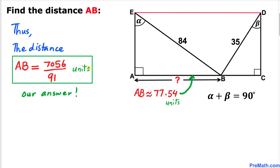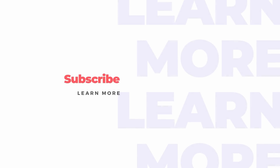Therefore our distance AB turns out to be 7056/91 units, which is approximately equal to 77.54 units. Thanks for watching, and please don't forget to subscribe to my channel for more exciting videos.